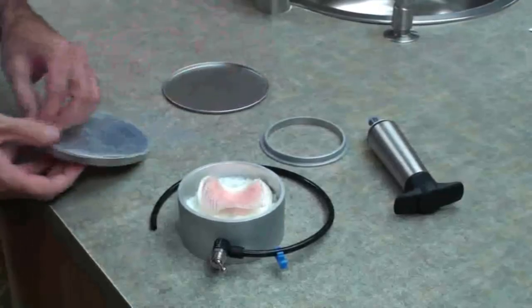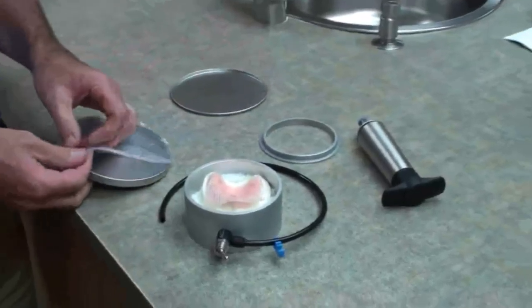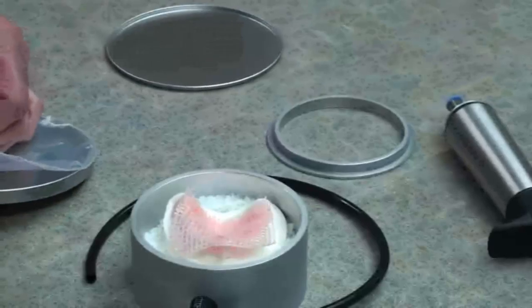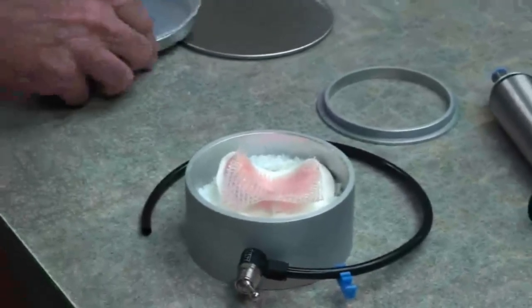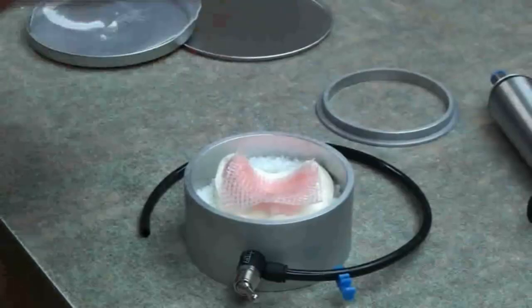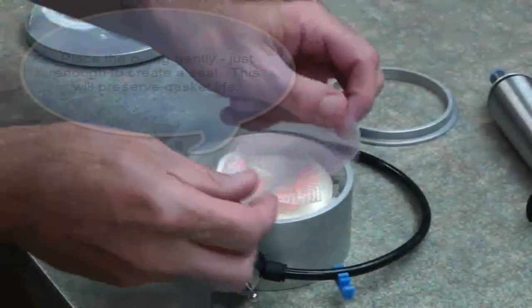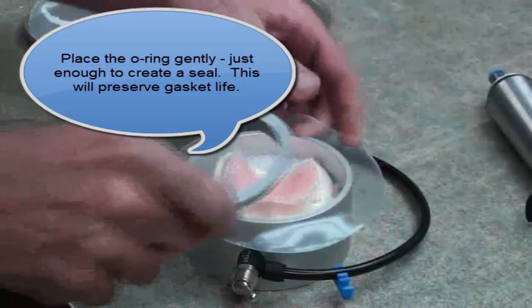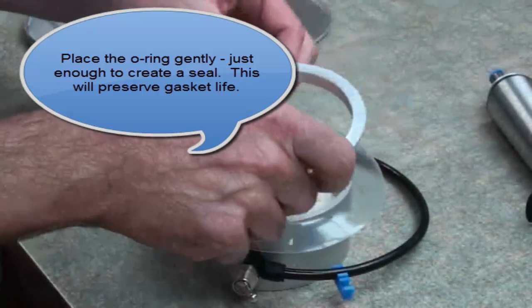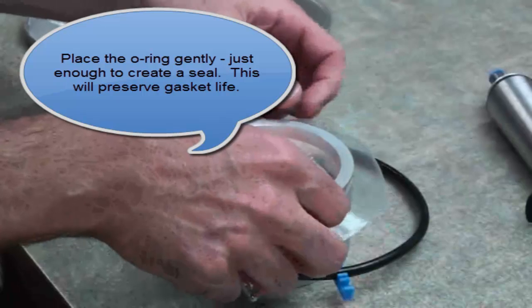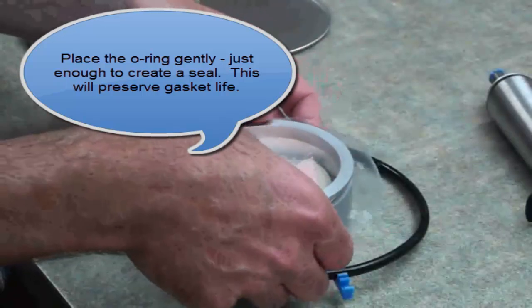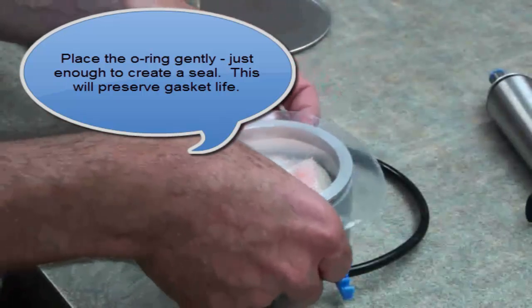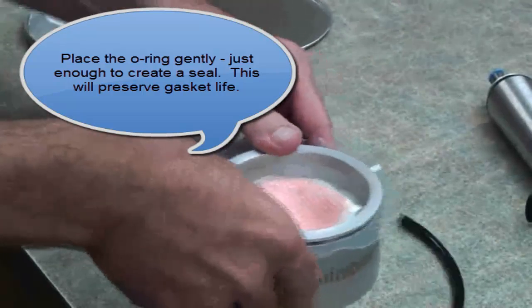Each splint vac unit comes with three reusable silicone gaskets. Remove one from the package and place it on the top of the chamber. Being careful not to pinch the gasket, apply the aluminum o-ring into place to seal the splint vac. The o-ring only needs to be placed firmly enough to create a complete seal. If it's seated too firmly, it may damage the gasket and make the o-ring more difficult to remove.